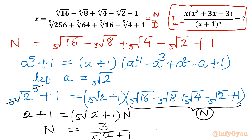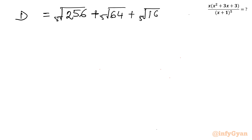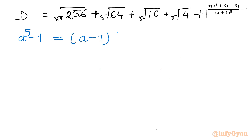Similarly I will calculate the denominator. d equals 5th root of 256 plus 5th root of 64 plus 5th root of 16 plus 5th root of 4 plus 1. Now I will use the binomial expansion formula for a⁵ - 1, which equals (a - 1)(a⁴ + a³ + a² + a + 1).